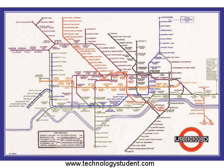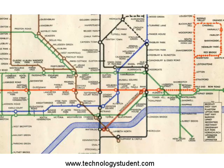In 1930, Beck worked on a style of topological map that would eventually become the standard graphical method of presenting maps around the world. He was interested in producing a functional map that only conveyed information needed by passengers — only stations and routes were displayed in a straightforward manner, making the map easy to read and understand.